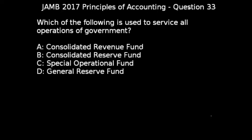JAM 2017 Principle of Accounting, Question 33. The question asks: which of the following is used to service all operations of government? The options are: A) Consolidated Revenue Fund, B) Consolidated Reserve Fund, C) Special Operation Fund, D) Traditional Fund, E) General Reserve Fund. The correct option is A, Consolidated Revenue Fund, because it deals with all government operation expenses incurred.